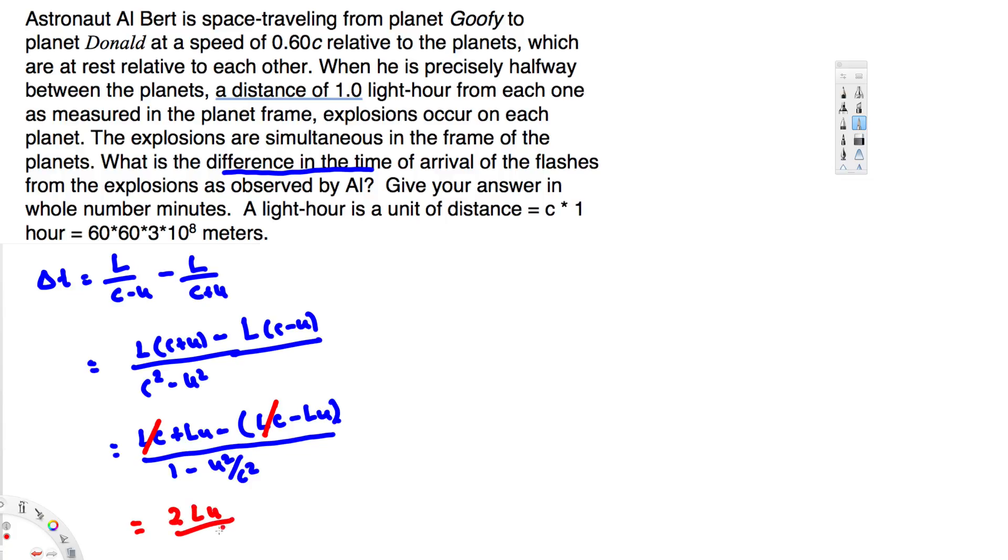So this is going to be 2LU over (1 - U²/C²). But the distance here is measured in the planet's frame, so the distance is L₀. We have L here, so in order to write this one in terms of L₀, we can use the Lorentz length contraction equation. If you remember, the equation is L = L₀√(1 - U²/C²).